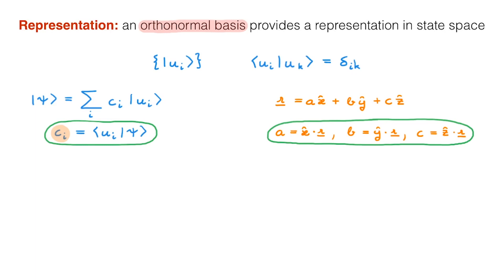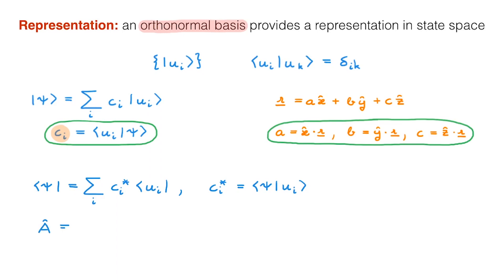In the video on representations, we also learned that we can write down bras in a particular basis, where the expansion coefficients are the conjugates of the ket expansion coefficients, and we can write down operators in a particular basis, where the expansion coefficients, called matrix elements, are given by the corresponding bracket expressions.